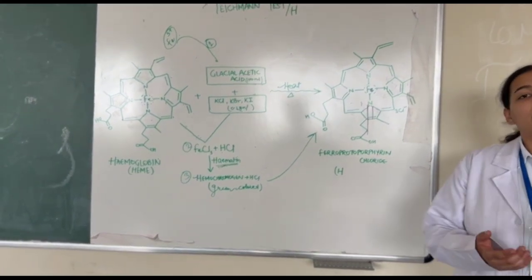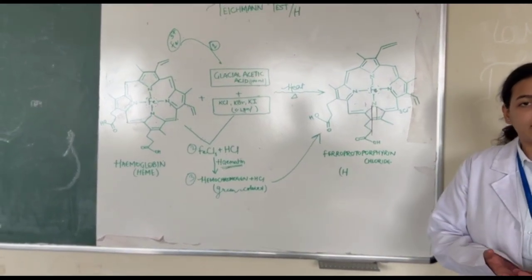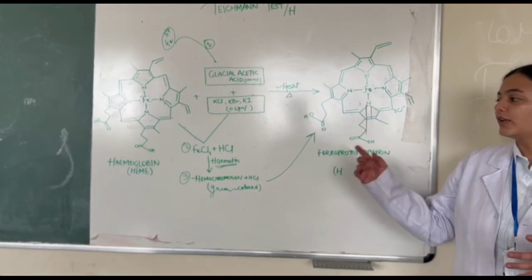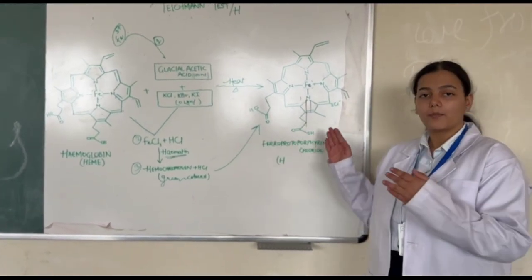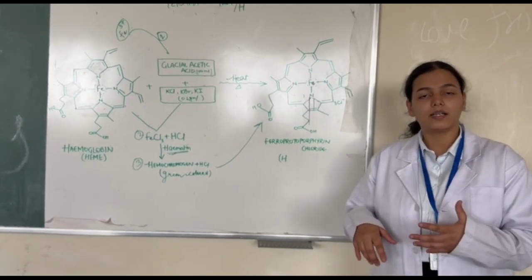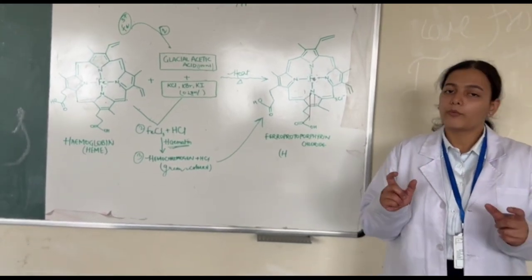In the same way, the bromide and iodide from the salts of the reagent react with ferric iron and form similar compounds. The result is the same: brown rhomboid crystals.